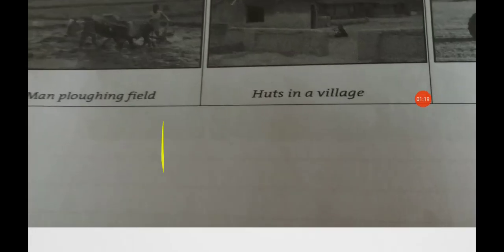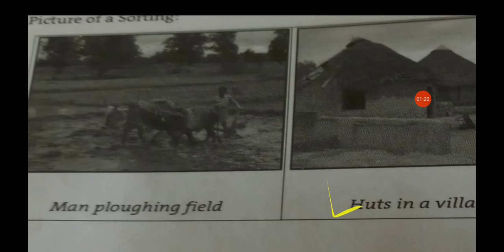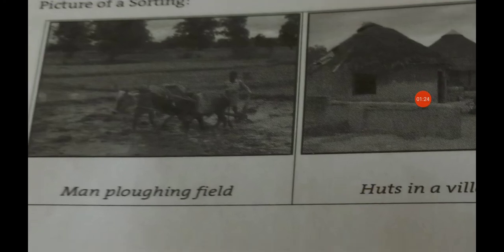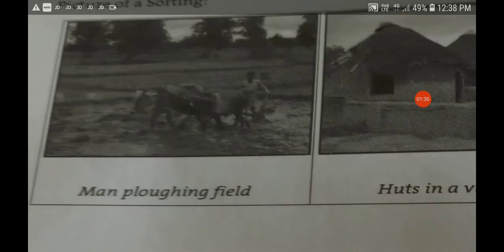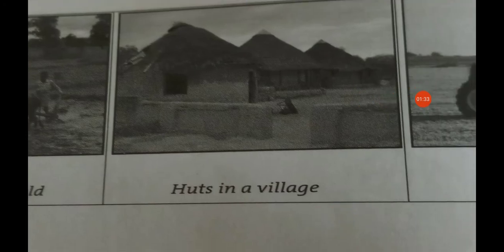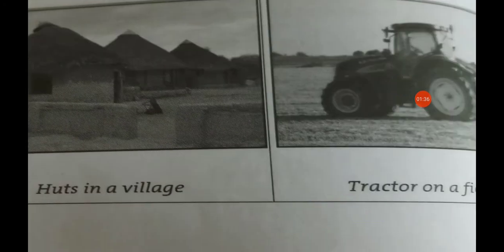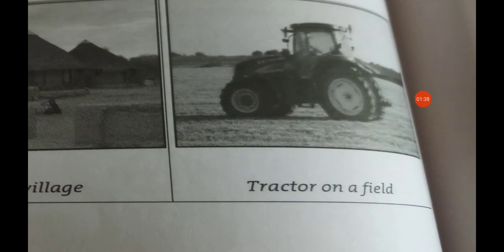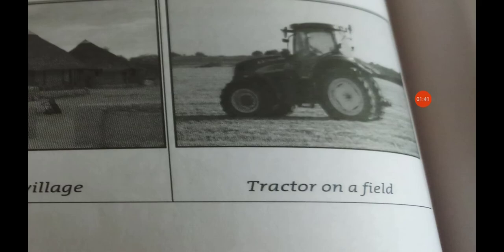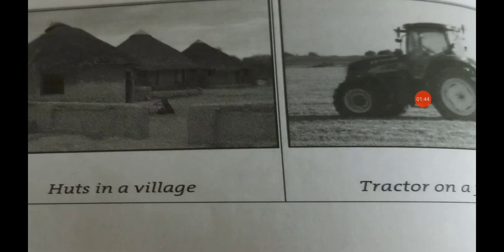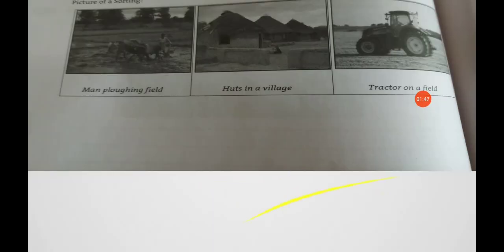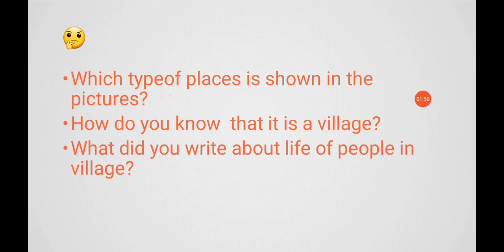Now look at these pictures. In the first picture, there is a man ploughing the fields. Next, there are huts in the village. And next, there is a tractor on a field. Now students, tell me what type of place is shown in the pictures. The picture shows life in villages.